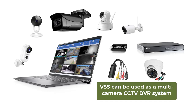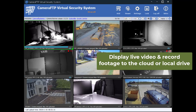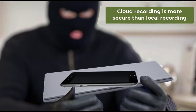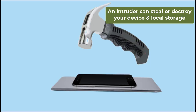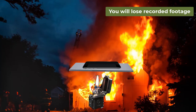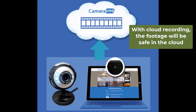CameraFTP VSS software offers much more powerful features than a regular IP camera. It can display live video on your PC or TV screen like a CCTV system. It can record image, video, and audio. It supports local recording and cloud recording. Cloud recording is more secure than local recording — with local recording, an intruder could steal or destroy your computer and webcam, and you would lose the recorded footage.